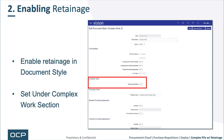Enabling retainage is pretty easy. You go within the document styles within PO or SSP — Self Service Procurement — and you enable this particular function within that document style. This is done under the complex work section.